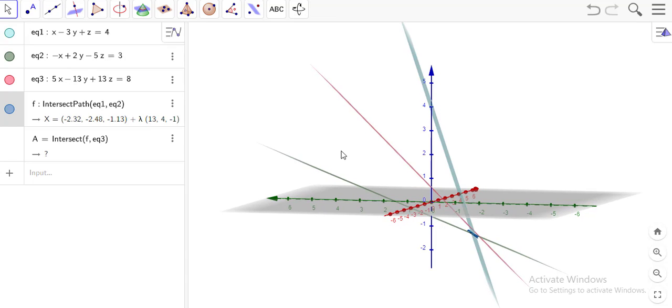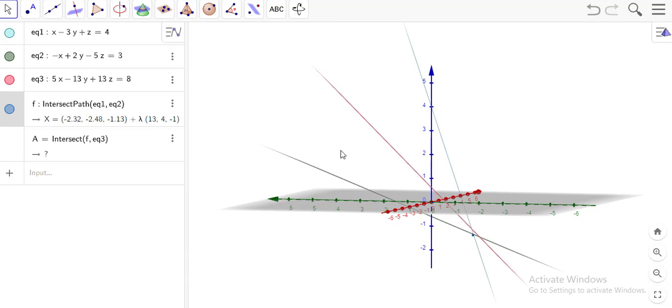From this point of view, it's perfectly seen that this line that is in the intersection of these two planes does not intersect the third plane at any point. So this system of equations does not have a solution. Thank you.